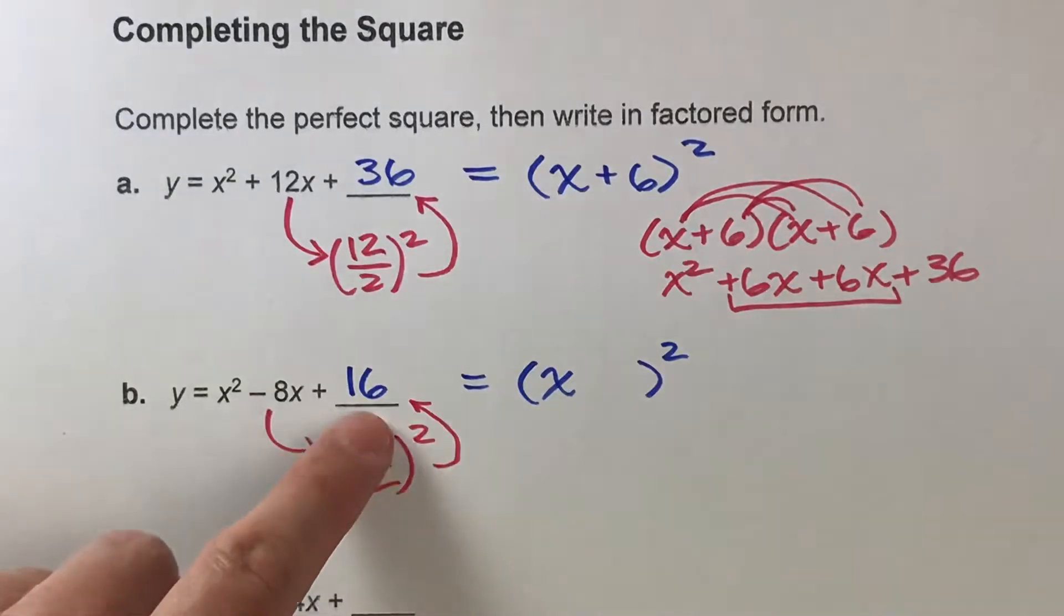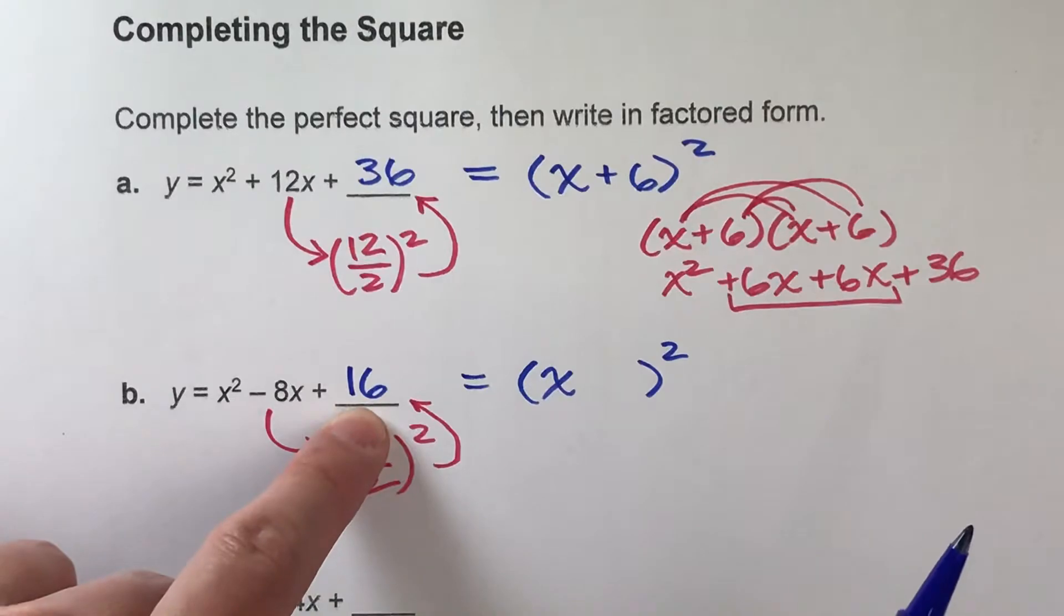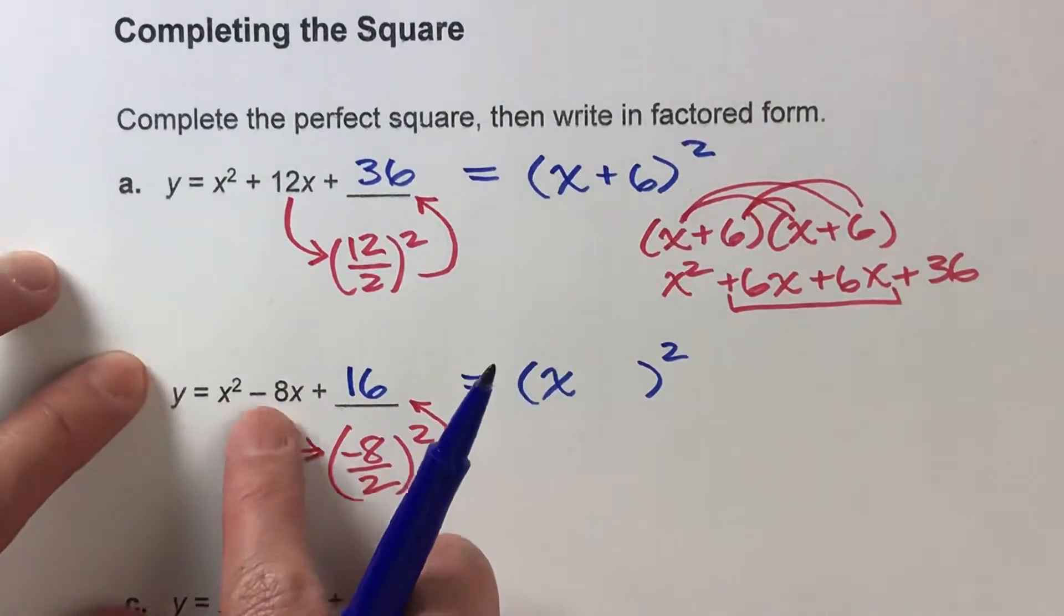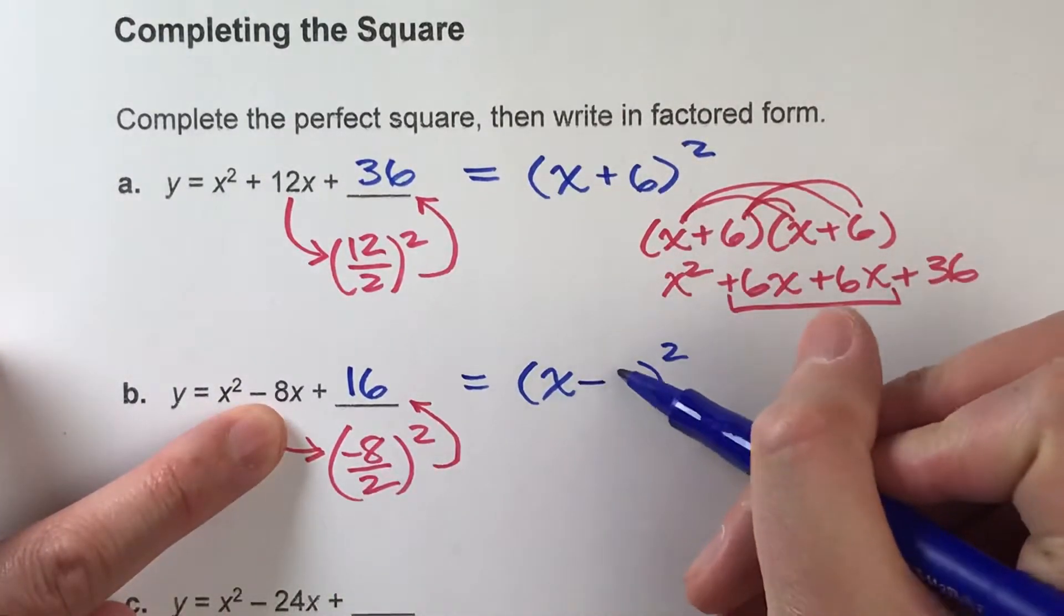Remember, the square root of 16 could also be negative 4, because negative 4 times itself also equals 16. So when you take the square root of these numbers, don't forget there's a positive and a negative answer. And you're going to take the one that matches up with this number divided by 2. In this case, negative 4 makes the most sense.